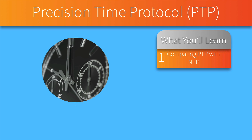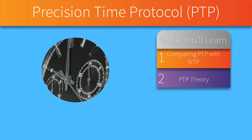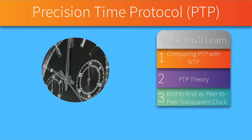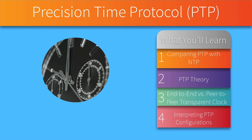Why do we need something that is more precise than NTP? We'll see how this works, how we can account for network delay, and we'll consider a couple of transparent clock types: end-to-end versus peer-to-peer. The Encore exam doesn't require you to know how to configure PTP, but you need to be able to interpret PTP configurations, and we're going to see how to do that in this video.